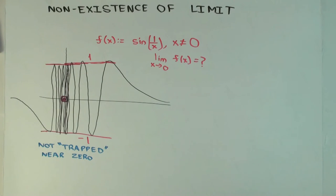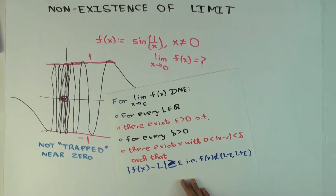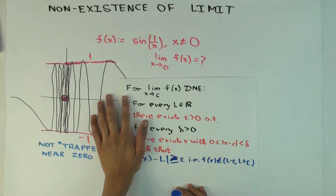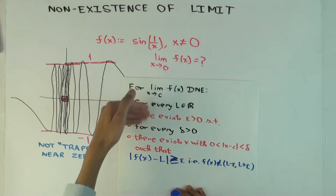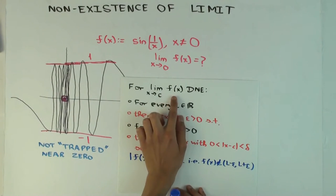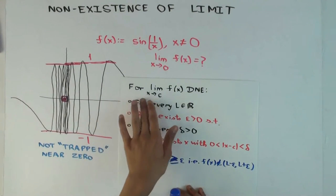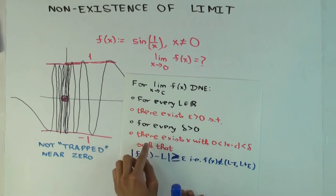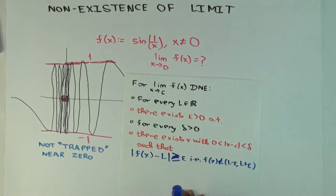Let's think of this in terms of the game between a prover and a skeptic — you should review that video or the corresponding material. What does it mean to say that the limit does not exist? It's the usual way we say the limit statement is false, except we add one step at the beginning: for every L in ℝ, the statement 'limit as x approaches c of f(x) equals L' is false. So it reads: for every L in ℝ, there exists epsilon greater than 0, such that for every delta greater than 0, there exists x in the delta-neighborhood of c, such that f(x) is not in the epsilon-neighborhood of L.